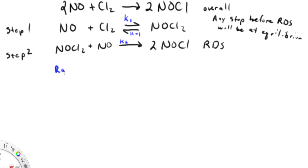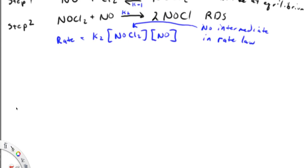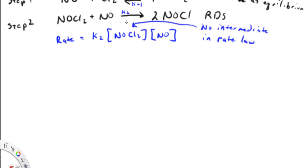So if we use this second reaction as our rate determining step, our rate law then is the rate's going to be equal to K2 times NOCl2 times NO. Now there's a problem with this, and here it is. This is an intermediate, and we don't want intermediate in the rate law. So what we need to do is get rid of this intermediate in the rate law.